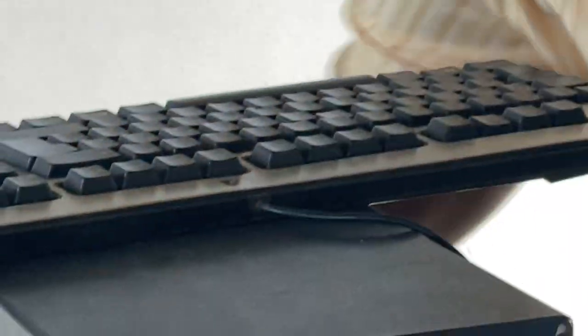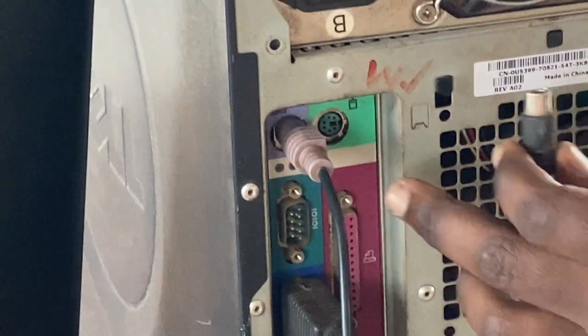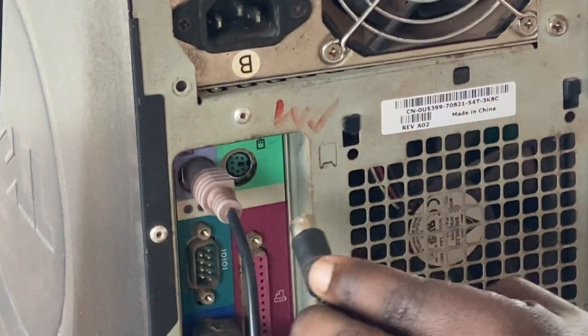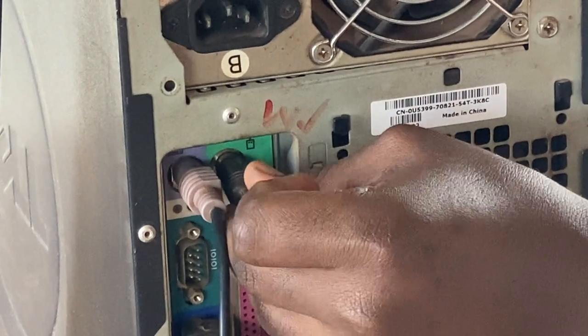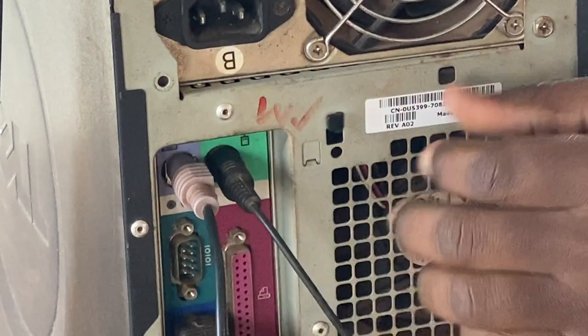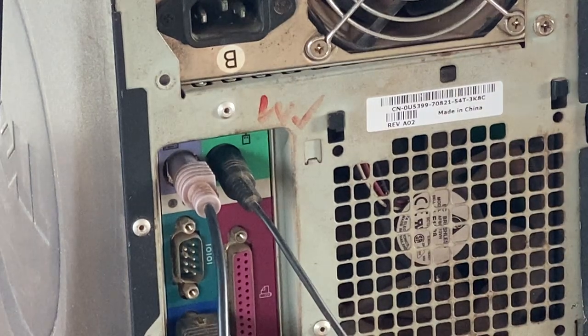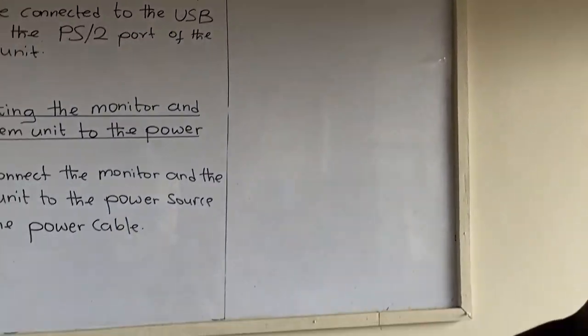Now, my mouse. My mouse is also made up of a PS2 cable, so I have connected it to the PS2 port on the system unit. Now, I have connected my mouse and keyboard to the system unit.